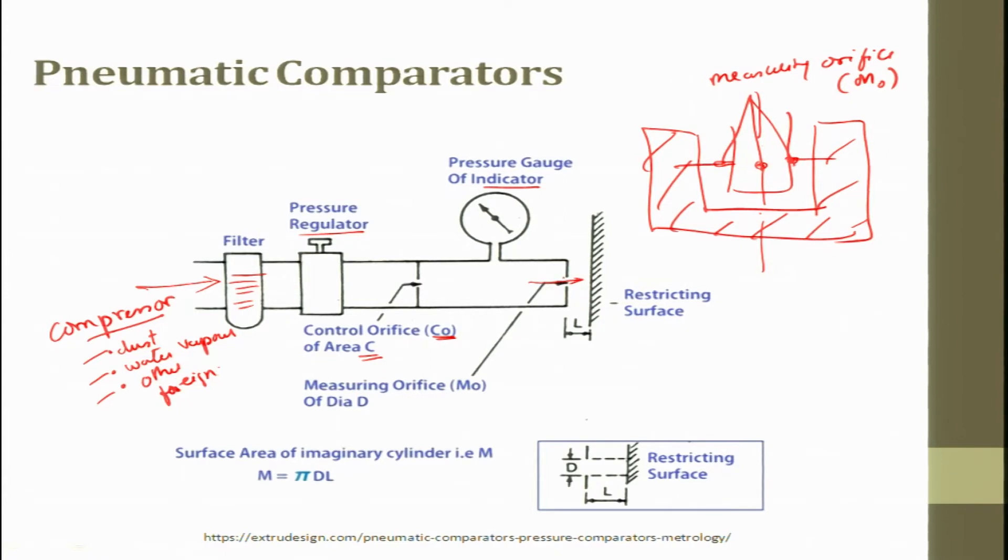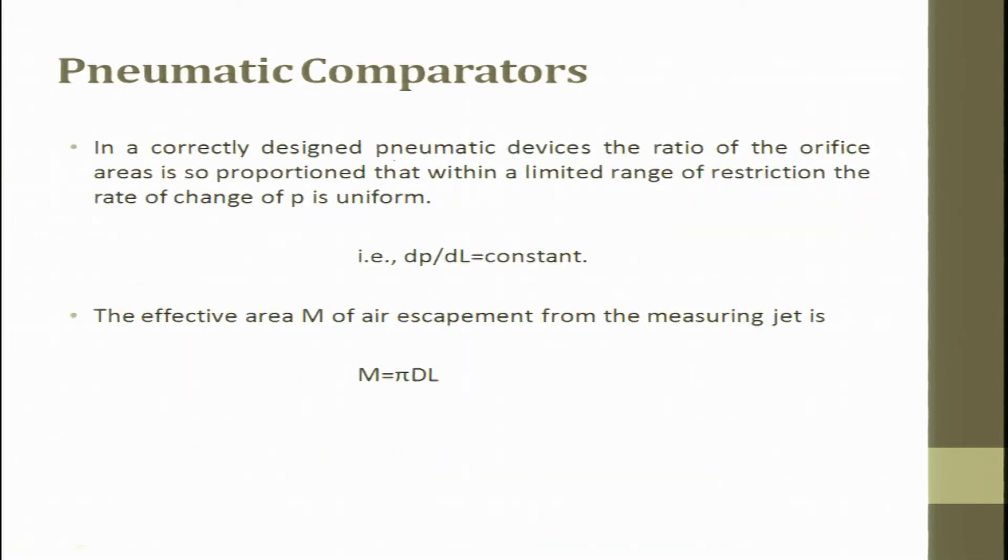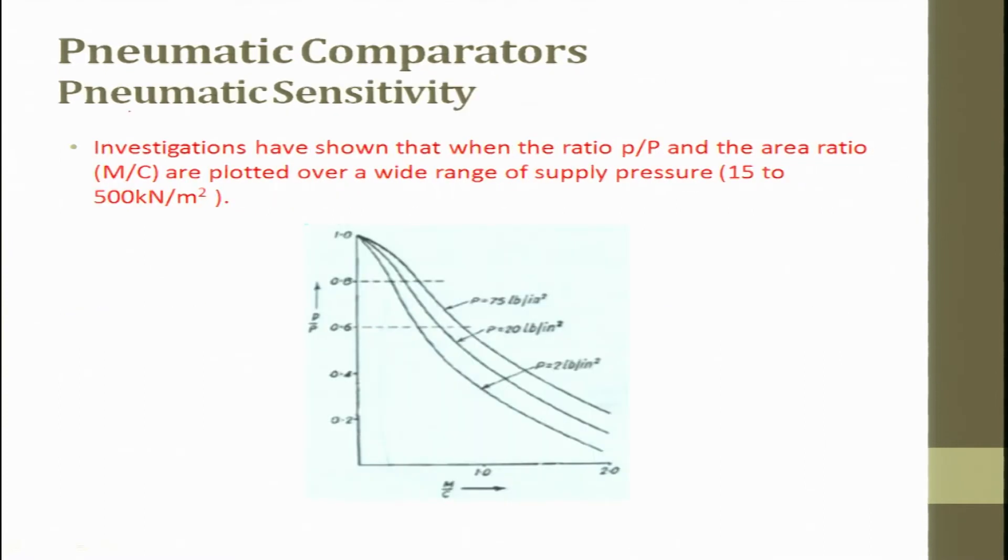The distance between the measuring orifice of the diameter and the restriction orifice is called L. The surface area of imaginary cylinder is M, the orifice diameter is D and this is the length. This is the zoomed figure of it, this is the D whatever is given here. In a correctly designed pneumatic device the ratio of the orifice area is so proportioned that within a limited range of restriction the rate of change of P is uniform. D P by D L we will try to maintain it as constant. The effective area M of the air escapement from the measuring jet is pi into D into L.